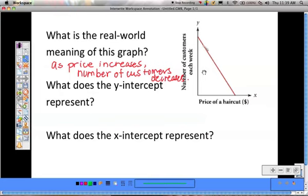What does the y-intercept represent? The y-intercept is where your line meets the y-axis. Here's the y-intercept. What does it mean? It means that there's going to be a lot of customers when the price of the haircut is zero or very low. A lot of customers when the price is zero, if that's how they're scaling the graph, or if it's low.